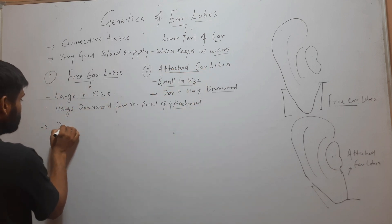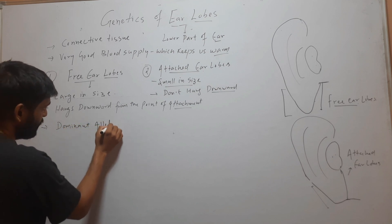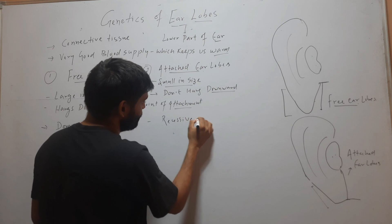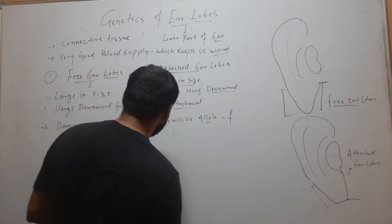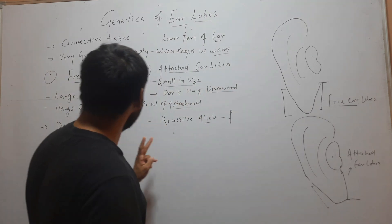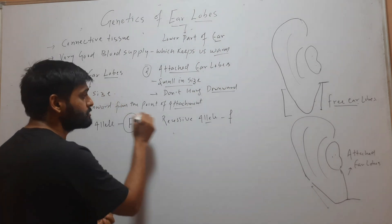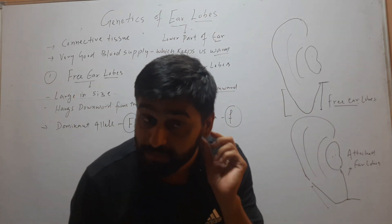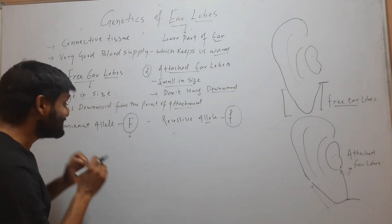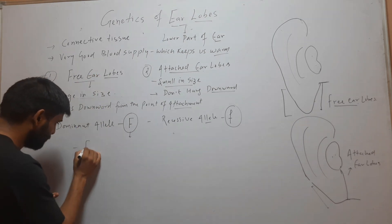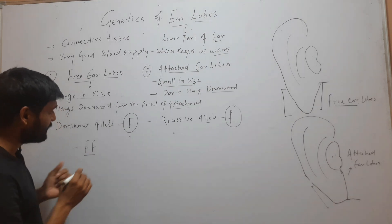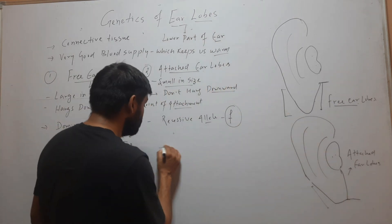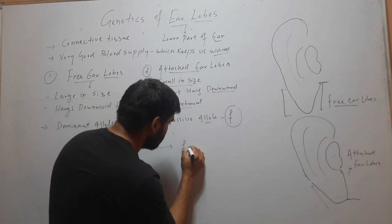Free ear lobes are due to a dominant allele — let's call it capital F. Attached ear lobes are due to a recessive allele — let's call it small f. So the gene for ear lobe has two alleles: capital F (dominant) and small f (recessive). My ear lobe is free, so my genotype is either capital F capital F, or capital F small f. When any person has an attached ear lobe, their genotype will be small f small f.